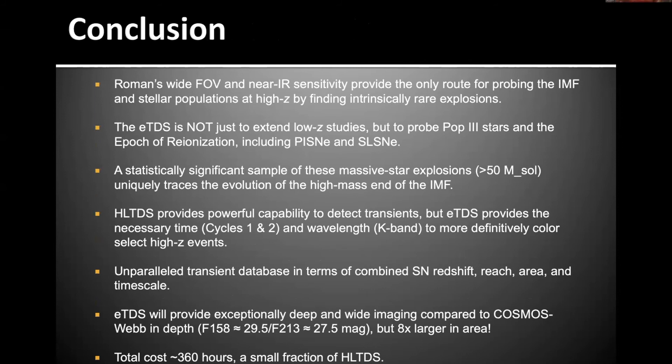In conclusion, I really want to read these points because it is so important. Roman's wide field of view and near-IR sensitivity are the only route for probing these stellar populations at high Z and to find intrinsically rare explosions. ETDS is not just an extension of low Z studies, but it probes POP3 stars and the epoch of reionization. A statistically significant sample of these massive star explosions uniquely trace the evolution of the high mass end of the IMF. And the highlighted time domain survey does provide powerful capabilities to detect such transients, but you need the ETDS to provide the time scale and the wavelength coverage to definitively identify some of these rare transients.